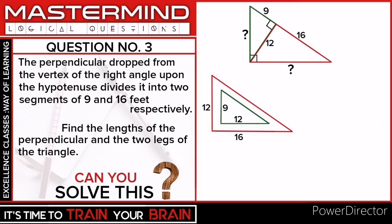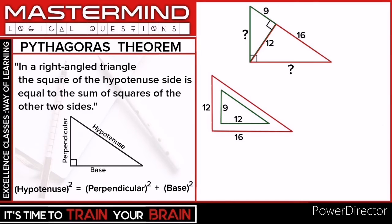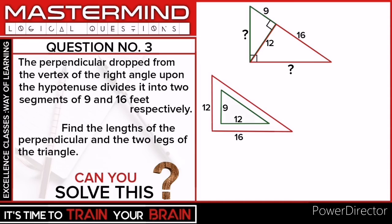Notice that each leg of the triangle is equal to the hypotenuse of one of the smaller triangles. We use the Pythagorean theorem to figure out the lengths of the legs. For the green triangle, the hypotenuse would be the square root of the sum of the squares of its legs: the square root of 9 squared plus 12 squared.